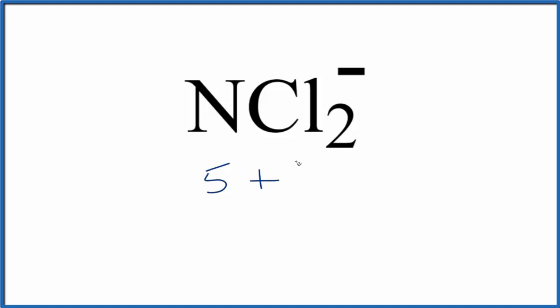Chlorine, group 17, so it'll have 7. We have 2 chlorine atoms. And then this negative sign, that means we have 1 extra electron. So we have a total of 20 valence electrons for the NCl2 Lewis structure.